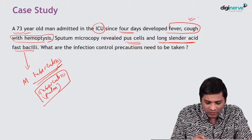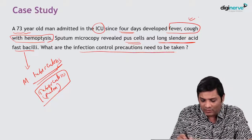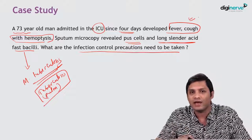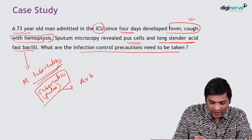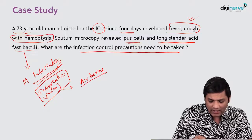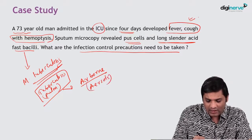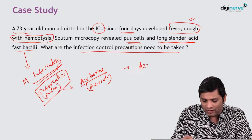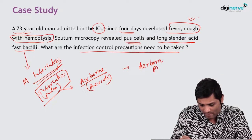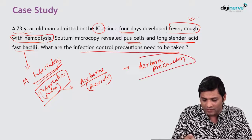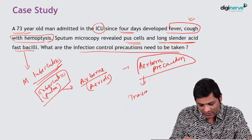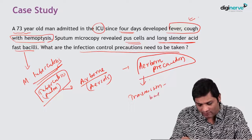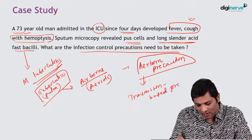The question here is: what are the infection control precautions that need to be taken? A point to be remembered is that tuberculosis is transmitted by the airborne route. It is transmitted by aerosols, therefore you need to take airborne precautions. Airborne precautions are a type of transmission-based precaution.